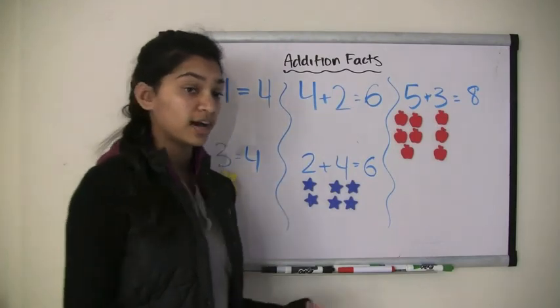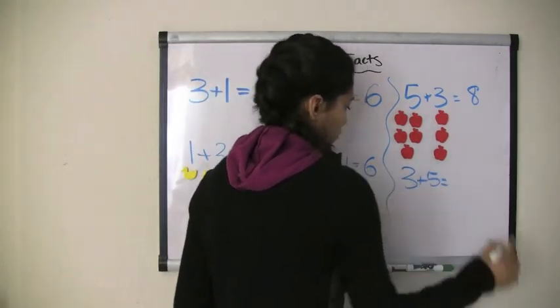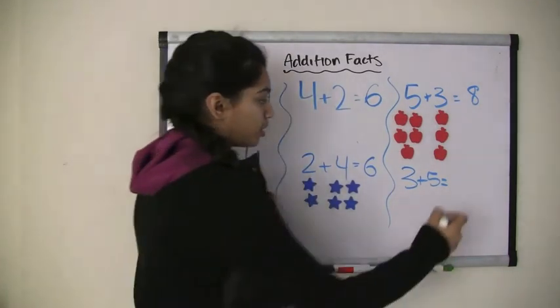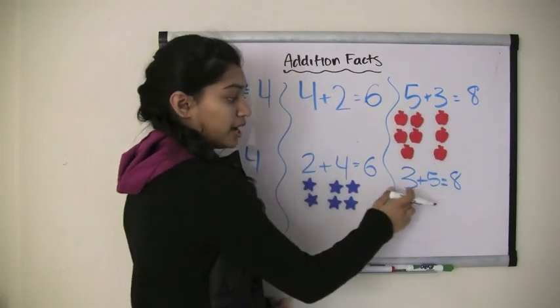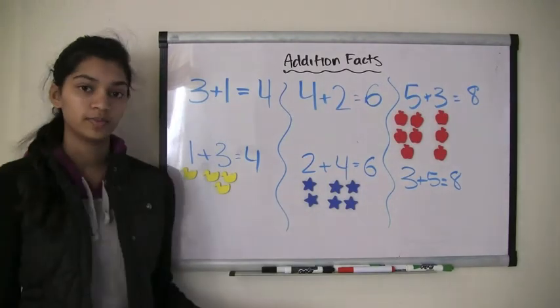Now, can you tell me what 3 plus 5 must equal? Yeah, it equals 8. Because all I did was flip these two numbers. So instead of 5 plus 3, now I have 3 plus 5. So as we have seen from these problems, the answer remains the same.